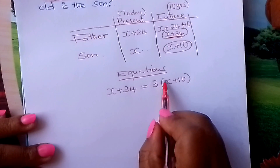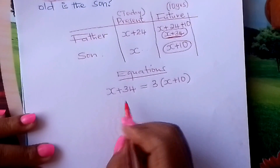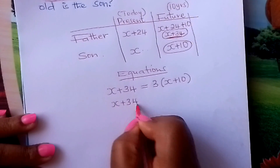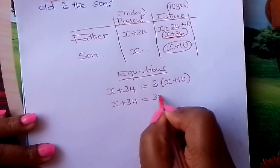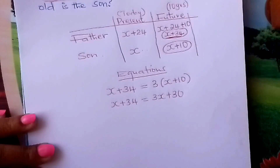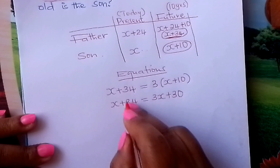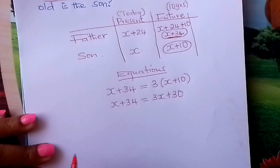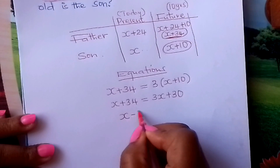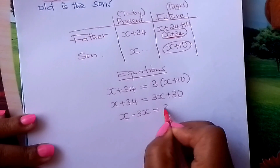Three times the age of the son — you put the age of the son in brackets. Then you remove the brackets correctly. Put the like terms together: bring the X's on one side and the numbers to the other side. So this will be X, and bringing this across it becomes minus 3X equals 30.